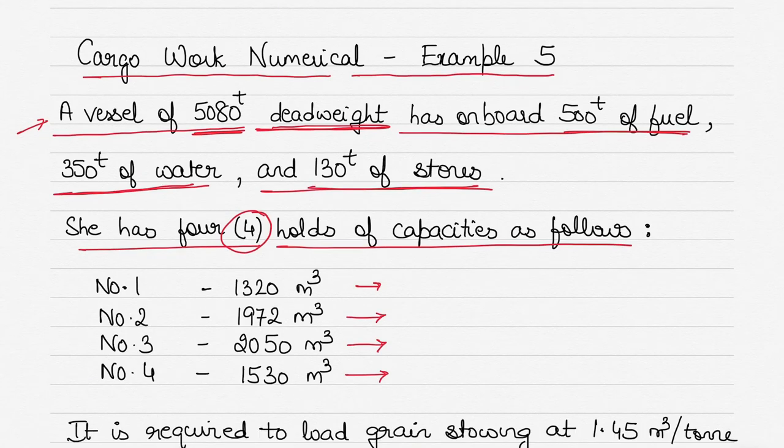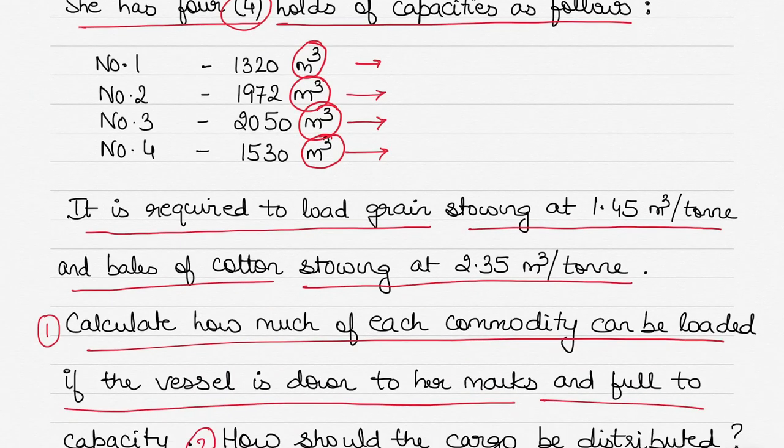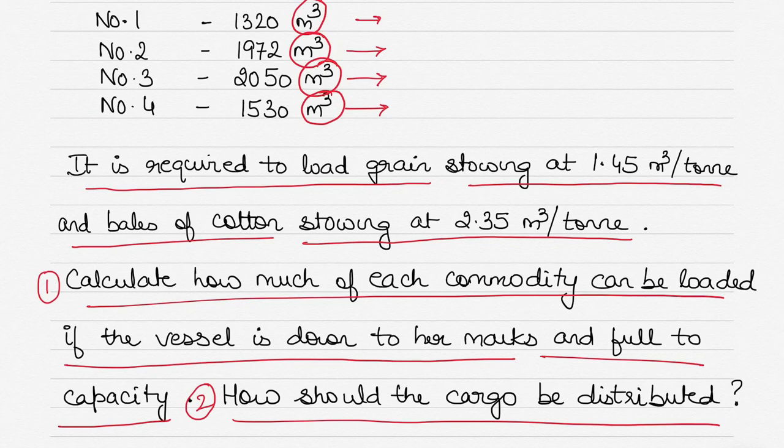She has four holds. You are given the volume of each hold, and how I know it's volume is because the unit is cubic meters. You have to load the cargo in these four cargo holds. But before you do that, you are required to first find out how much of each commodity can you load if the vessel is down to her marks and full to capacity. And secondly, you have to find out how should the cargo be distributed in each of the four cargo holds.